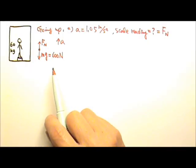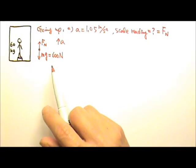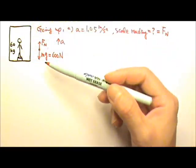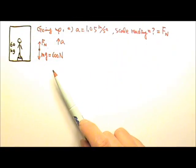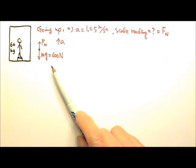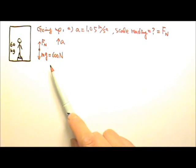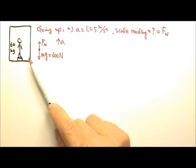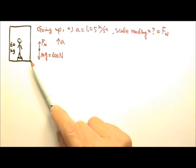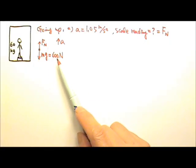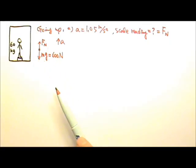Wait — what about the cables attached to the elevator? Don't they exert tension on the person? Although the cables do pull on the elevator, they do not exert a force on the person because the cables do not touch the person. The cable's pulling force on the elevator does affect the normal force on the person, but the cable's tension does not directly act on the person.